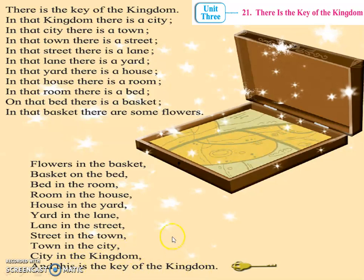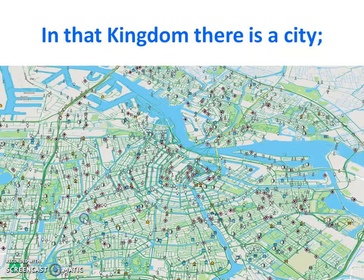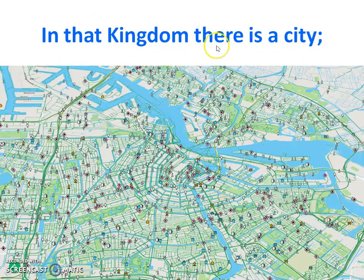Now dear students, let's learn this poem line by line. 'There is the key of the kingdom.' Here, in this poem, the poet talks about a key which belongs to a kingdom. The poet tells us things moving from biggest to smallest. First is kingdom, then city. Kingdom is bigger than city, city is smaller than kingdom. So we are going from bigger to smaller.